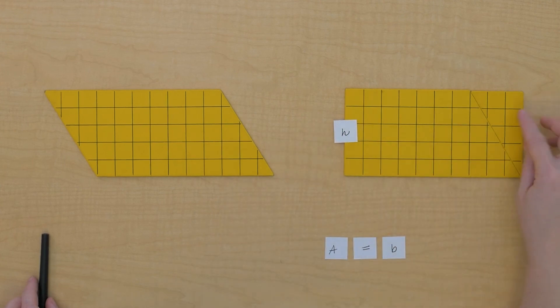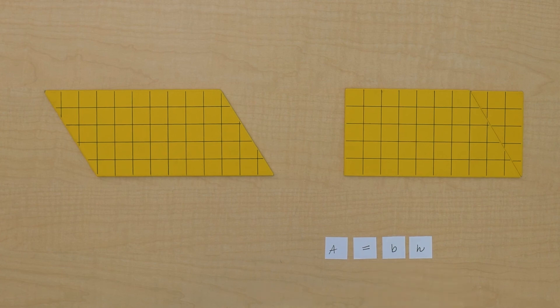So if we're going to find the area of a parallelogram, we multiply its base times its height. Maybe you'd like to go try this on some other parallelograms.